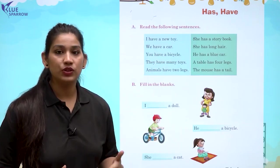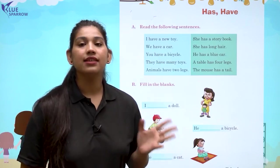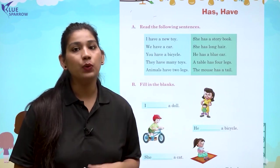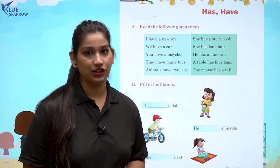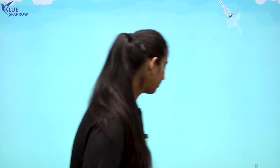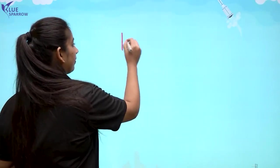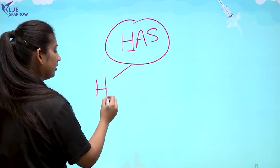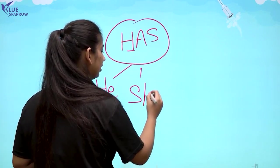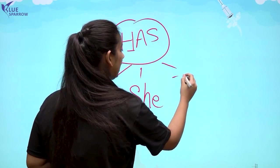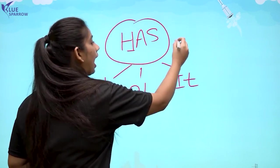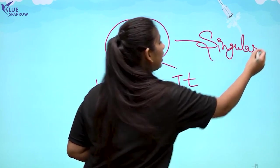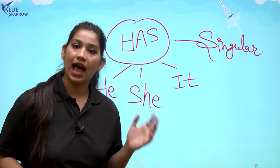Let us understand the uses of has first. Has is used with singular noun — that means one noun — and with words like he, she, it. Singular means one. Anything which we have one in number, we use has with that. He, she, it and singular — we use has with those.